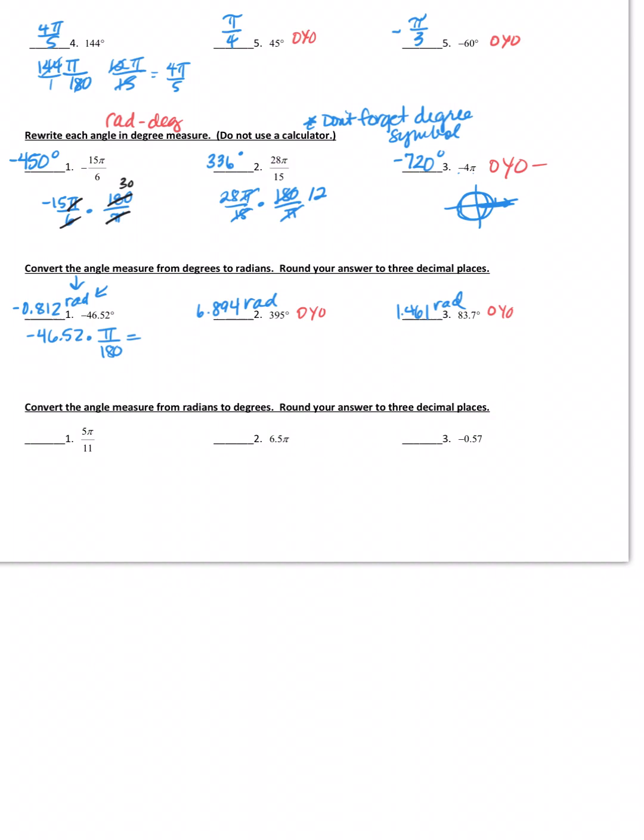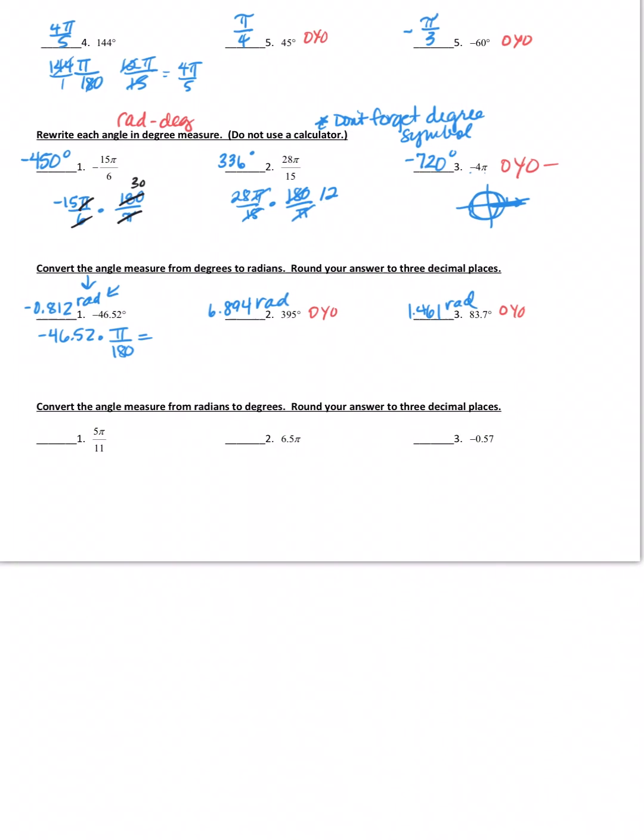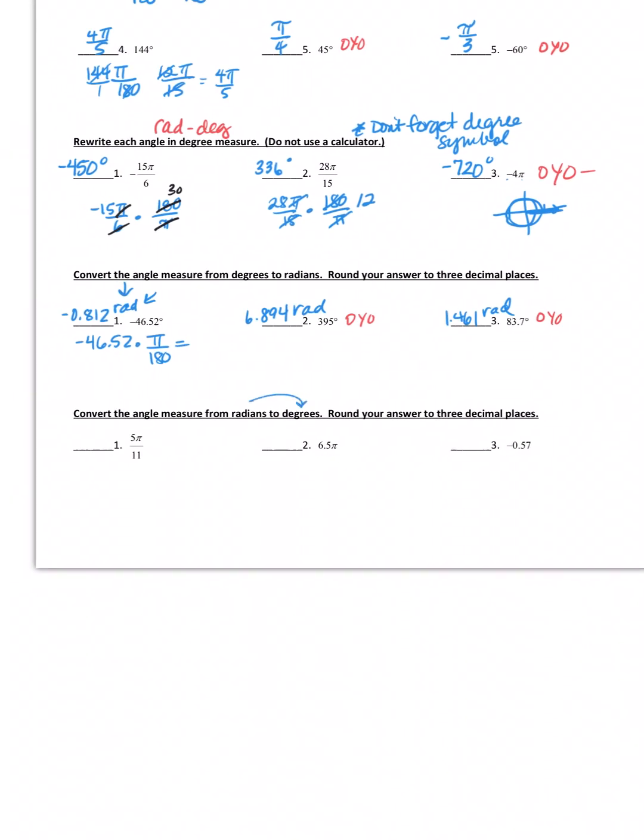Convert the angle measure from radians to degrees. So notice the direction we're going here: radians to degrees. Round to three decimal places. So 5π over 11, 180 over pi. I would just cancel out those, and then I would put in my calculator 5 times 180 divided by 11. So I get 81.818 degrees. Again, you need your degree symbol. Don't forget the degree symbol.